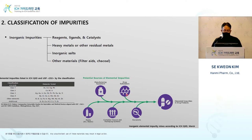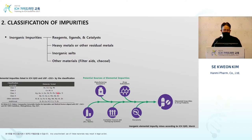Regarding ICH Q3D: all materials that can be used — including the drug substance, container, closure, and environment — everything related to the manufacturing process must be assessed for potential elemental impurities. We need to classify them into different classes and develop a strategy to control them.